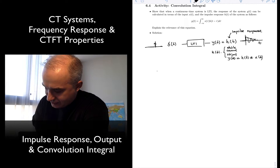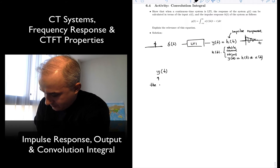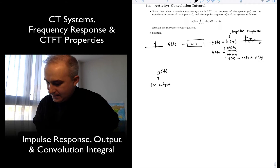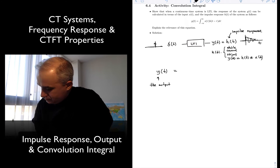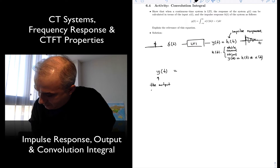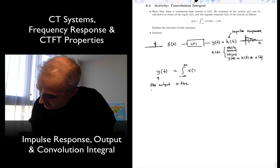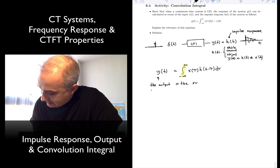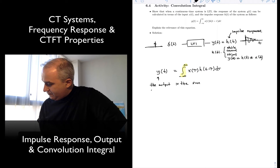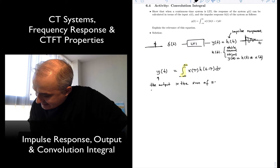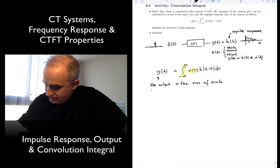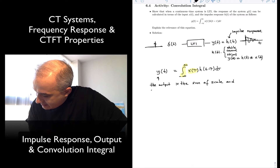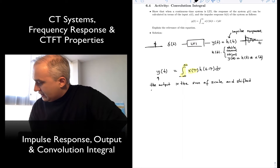Let's interpret this equation. Y — the output of the system for a particular input — is the integral from minus infinity to infinity of x(τ) h(t − τ) dτ. This is the sum — an integral is a sum, it's the continuous time sum — of scaled and shifted impulse responses.